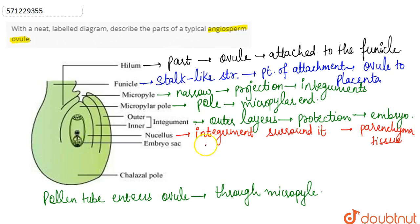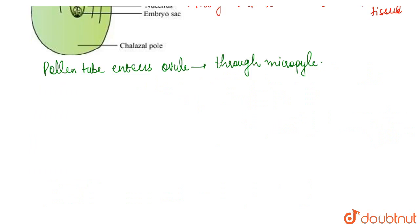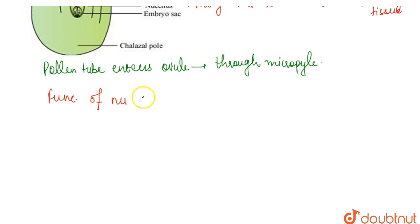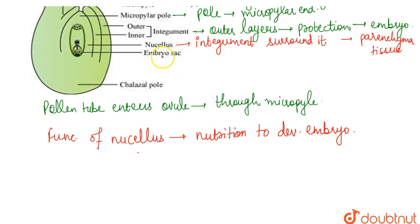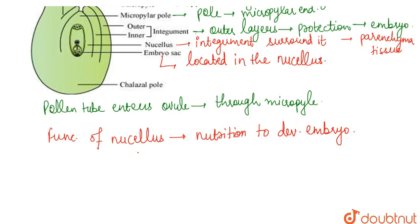The nucellus provides nutrition to the developing embryo. The embryo sac is located inside the nucellus. So when the embryo develops in the embryo sac, it can get nutrition from the nucellus, or the nucellus can provide nutrition to the developing embryo.